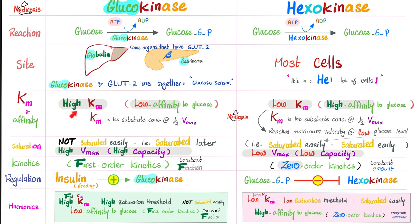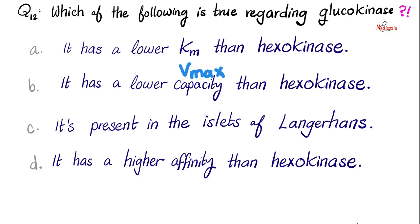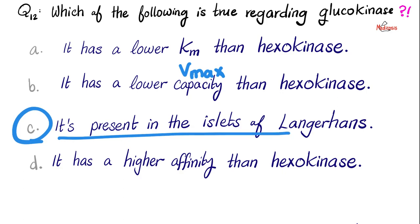Glucokinase has high Km, meaning lower affinity, compared to hexokinase, which has low Km, meaning higher affinity to glucose. Capacity-wise, glucokinase is high in Vmax, meaning high capacity, while hexokinase is low Vmax, meaning low capacity. Location: glucokinase is in the liver and in the beta cells of the islets of Langerhans of the pancreas. Hexokinase is in most cells. The answer is C — glucokinase is in the islets of Langerhans. Glucokinase has a higher Km, higher capacity, and lower affinity than hexokinase.